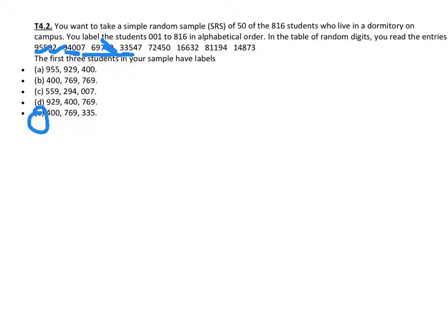One of the things here to note is sometimes repeats do make sense, but because every student is labeled with an individual number, getting another individual at 769 would be the same person. So here, again, repeats don't make sense.